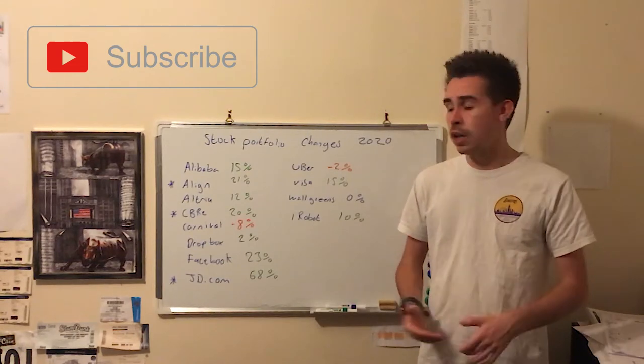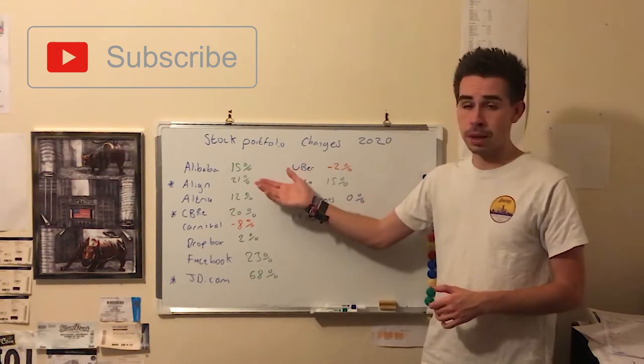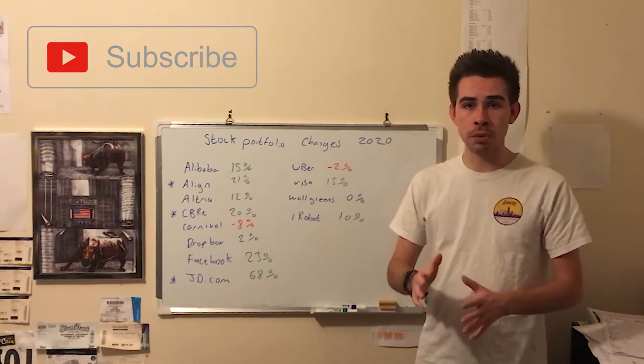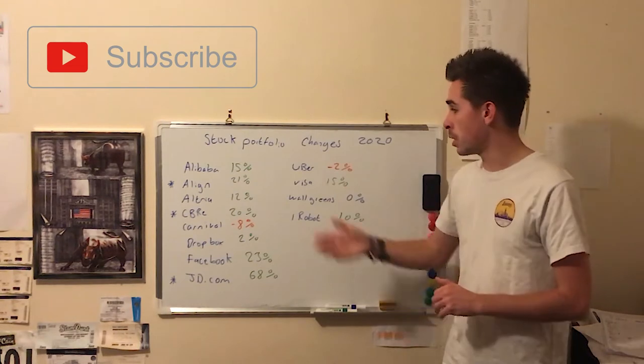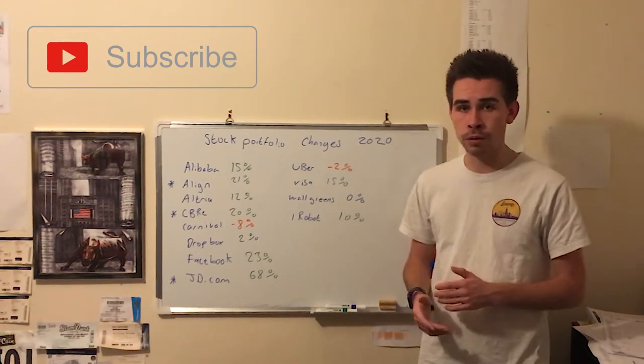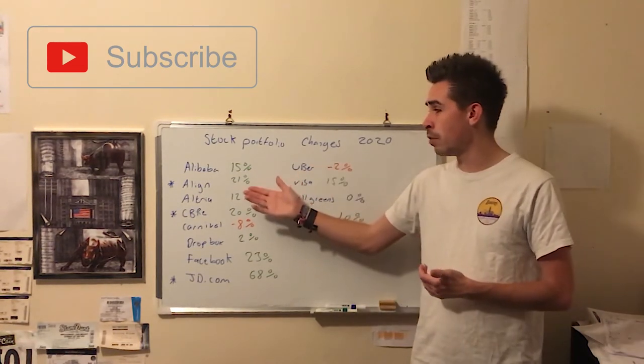The first one is Alibaba, which I'm up 15%, and I'll be honest with you, I've got no plans to really do anything with Alibaba. My second stock is Align Technology, which I'm up 21%, which is quite healthy really to be fair.